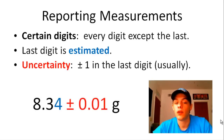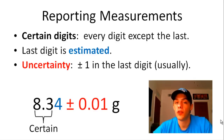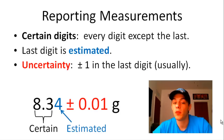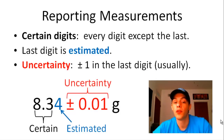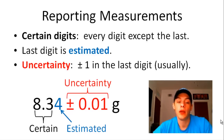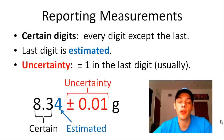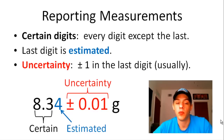Here is an example of a scientific measurement: 8.34 plus or minus 0.01 grams. The 8 and the 3 are our certain digits. That 4, the last digit, is the estimated digit. And the plus or minus 0.01 grams is our uncertainty. The uncertainty is very important because it tells us that the measurement could be anywhere from 8.33 grams to 8.35 grams — but not below 8.33 and definitely not above 8.35 grams.